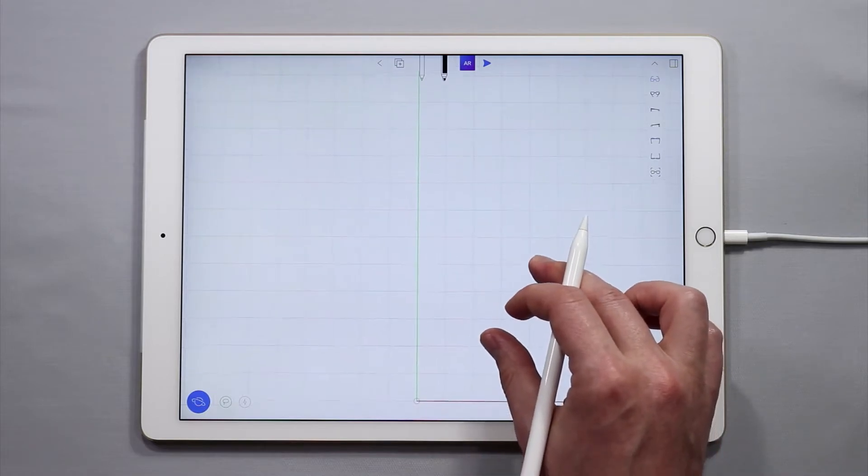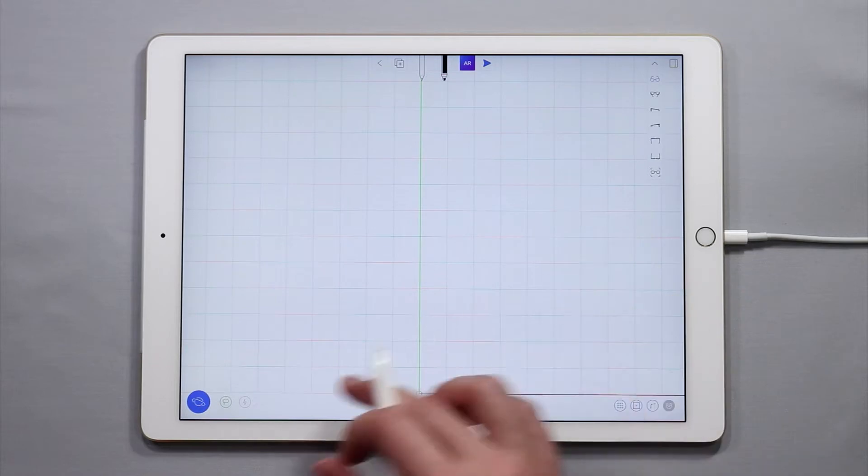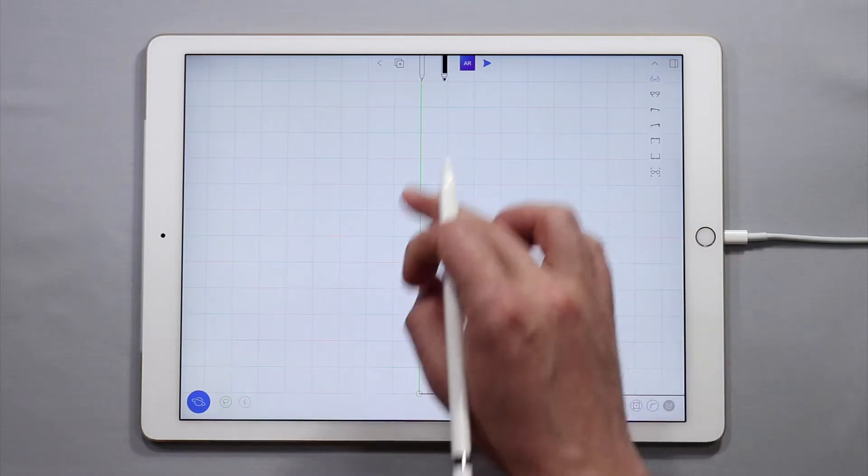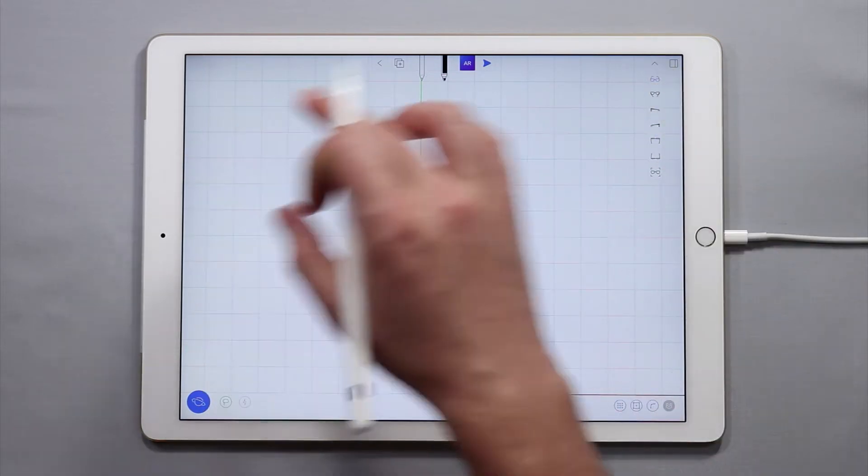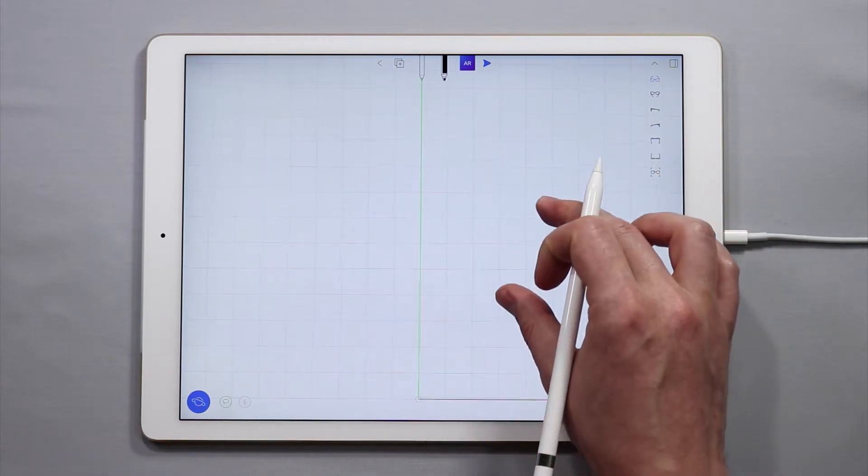When you first open up a new project you'll land in the UMake editor and you'll land on something that looks like this. You'll have a grid, your axes, and the interface around the edges. This white area where the grid is is known as your canvas.